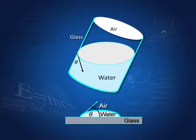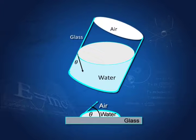Here again, there is water, there is air, and this angle — if I draw a tangent to the surface — this angle is the angle of contact. It is measured through the liquid, and the angle of contact does not depend on whether this beaker is straight or tilted; it does not matter.